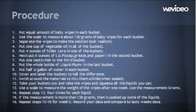Put four ounces of Toilet Care in the first bucket. Next, put eight ounces of SGP in the second bucket. Put one Septic Pack in the third bucket, and the whole bottle of Liquid Plumber in the fourth bucket. Put half a gallon of water in each bucket. Cover and label the buckets to tell the difference. Mix the materials, then take out the wipes after one week and squeeze out as much liquid as you can. Use the scale to measure the weight of the wipes after one week, in grams. Repeat this step four times for each bucket.